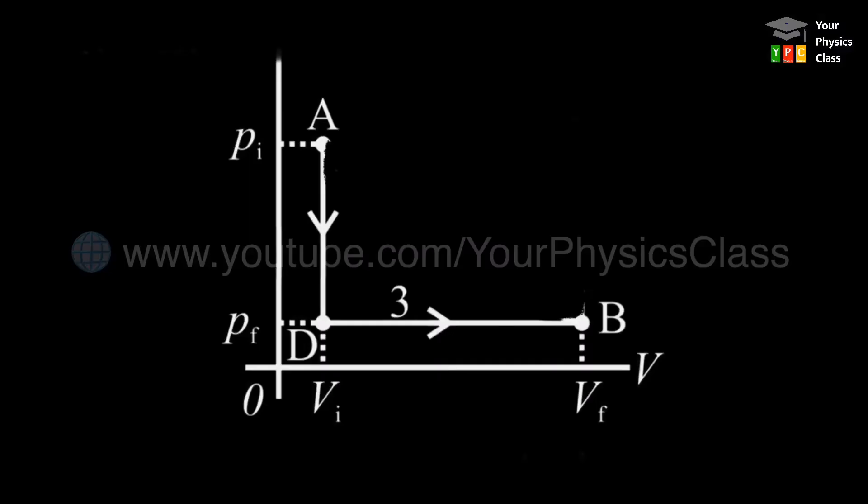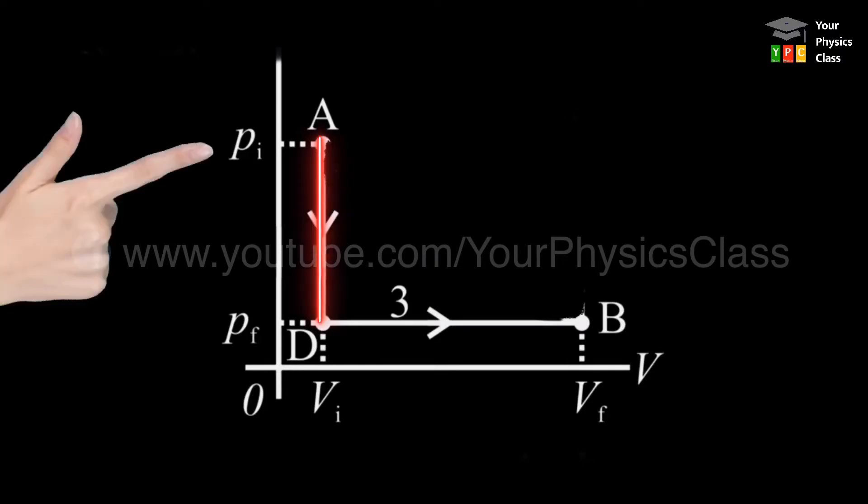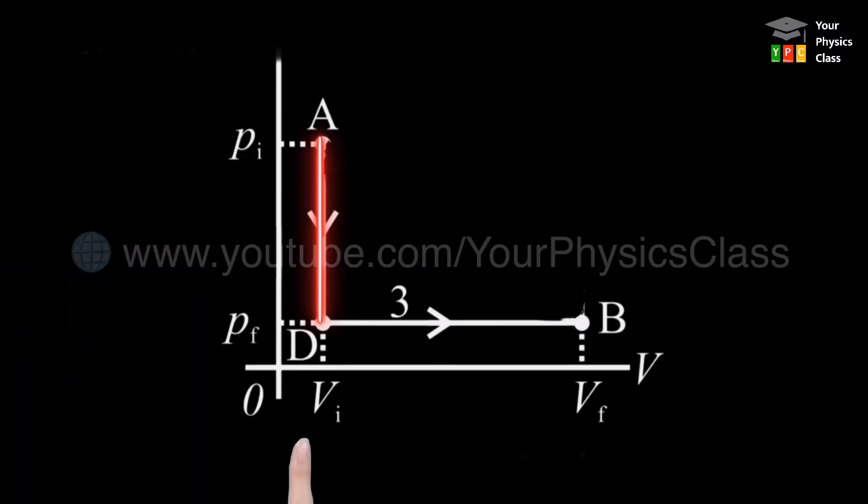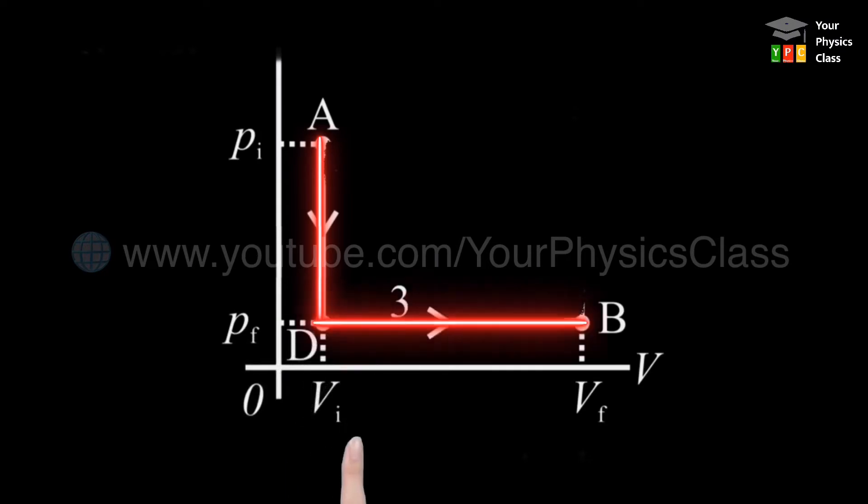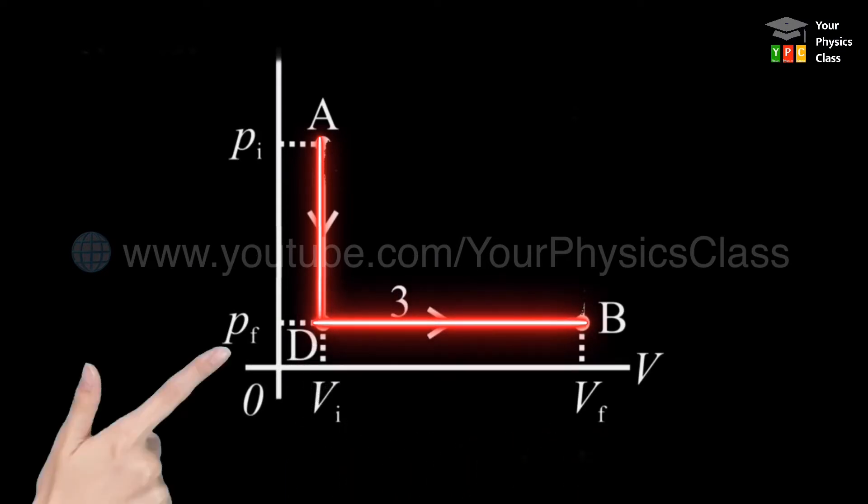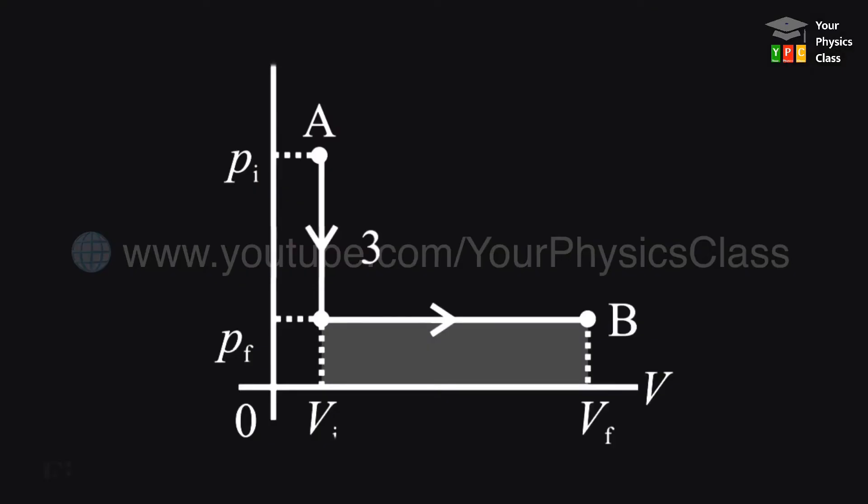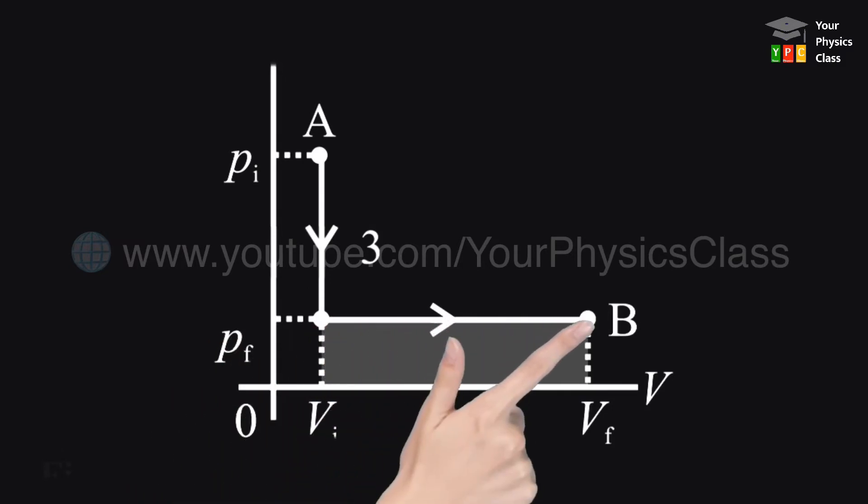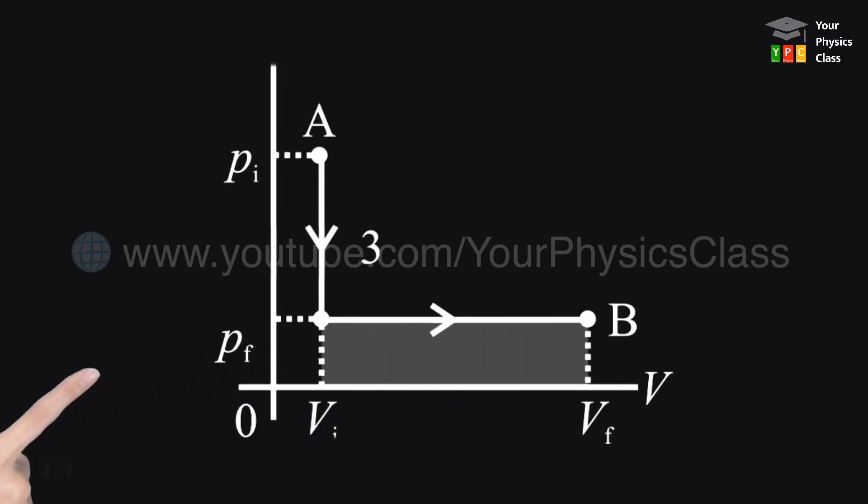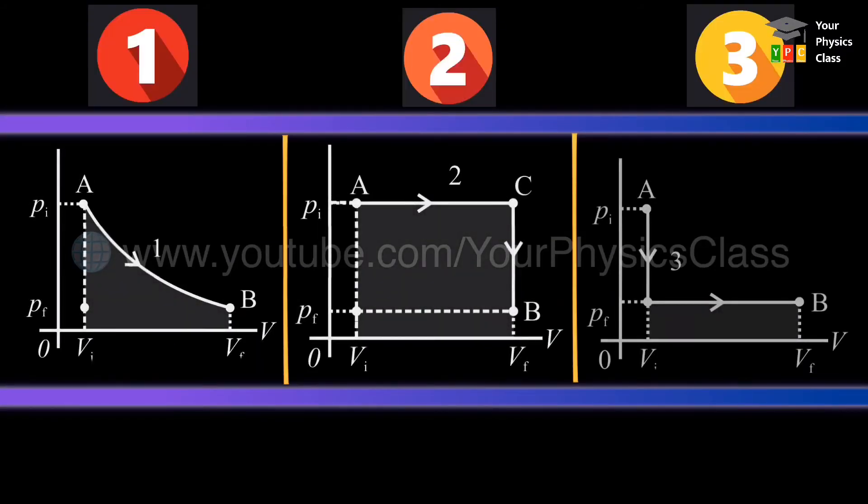The third way to change the state from A to B is path 3. In this case, pressure decreases from PI to PF but volume remains the same. Next, the volume changes to VF at constant pressure. The work done in this process is represented by the shaded area under curve 3. It is easily noticed that in the three cases we discussed, the amount of work done is not the same.